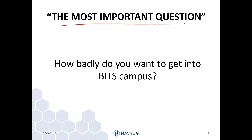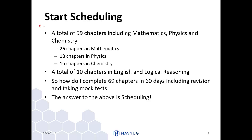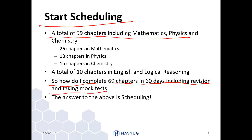The most important question before anyone starts preparation for BITSAT is: how badly do you want to get into a BITS campus? If you want it badly, let us start scheduling. A total of 59 chapters including Mathematics, Physics, and Chemistry is present in the BITSAT syllabus — 26 chapters in Mathematics, 18 in Physics, and 15 in Chemistry. A total of 10 chapters are there in the English and Logical Reasoning section. So how do we complete 69 chapters in 60 days, including revision as well as mock tests? The answer is scheduling.